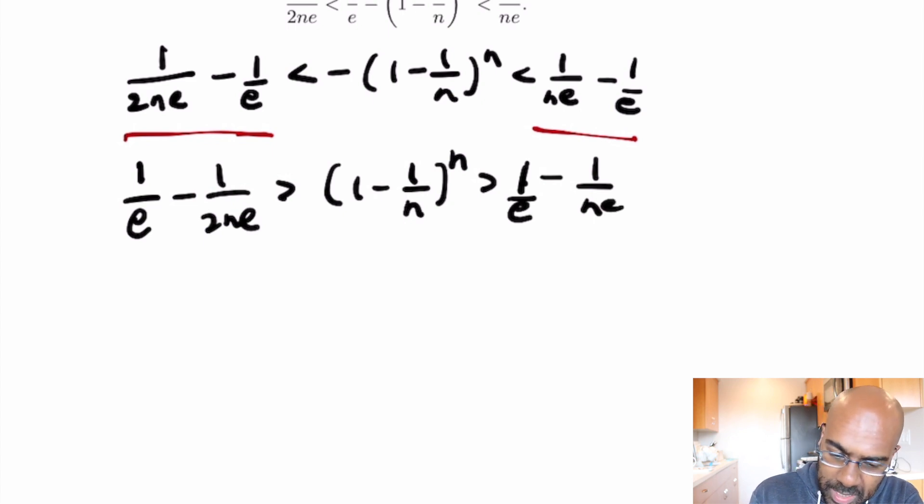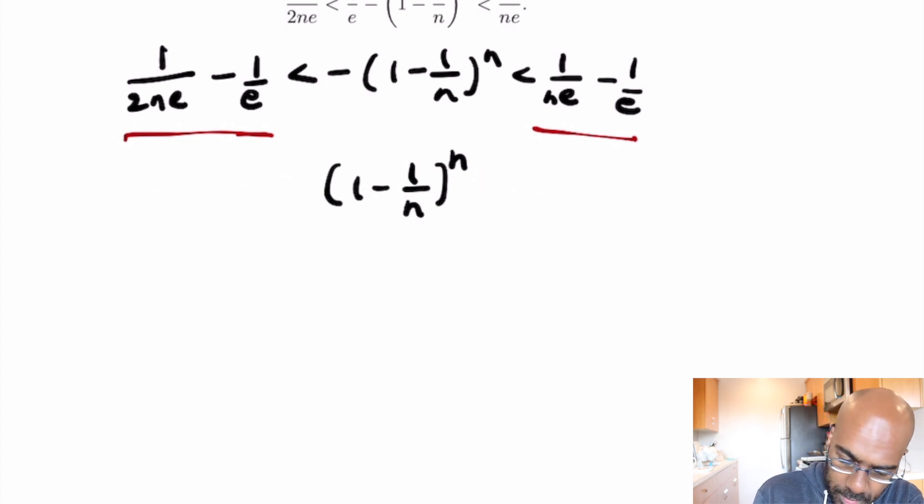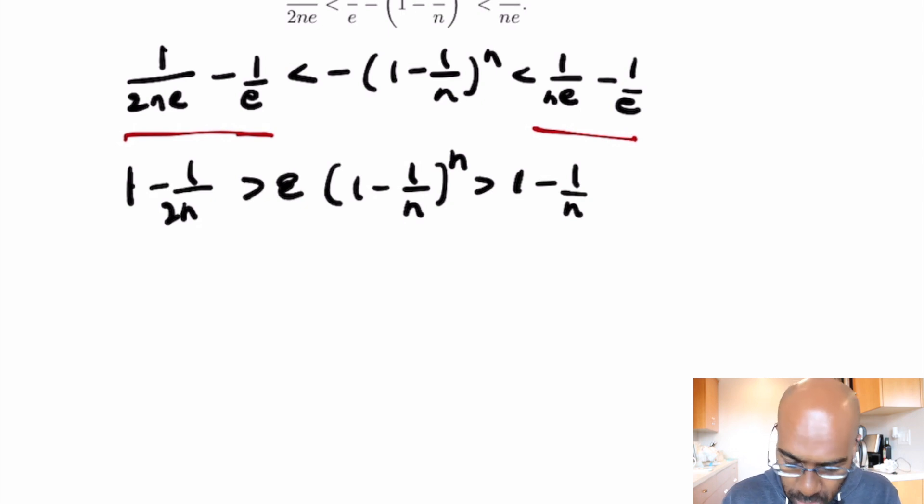Okay, and then we'll multiply by e as well just to make things uniform. If we do that we'll have 1 minus 1 over 2n being greater than e times this quantity being greater than 1 minus 1 over n as our equivalent inequality.